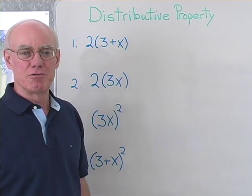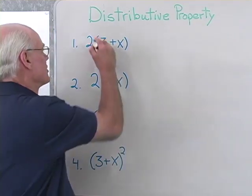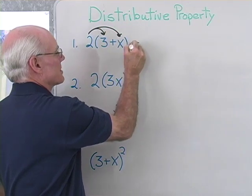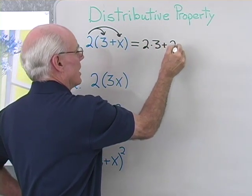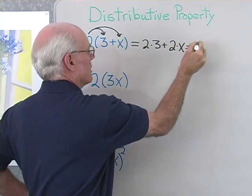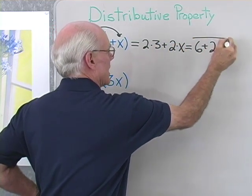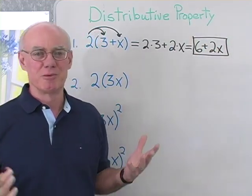If somebody said apply the distributive property or multiply or simplify, this is what you would do: 2 times 3 plus 2 times X. So 2 times 3 plus 2 times X, and that would give us 6 plus 2X. That's the answer to that problem.